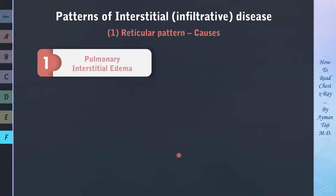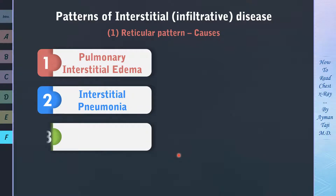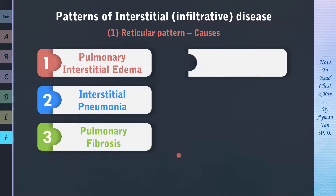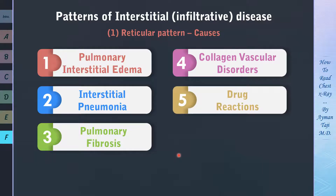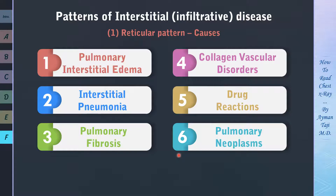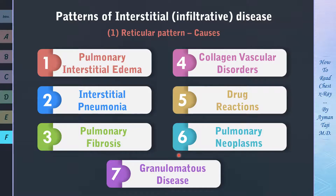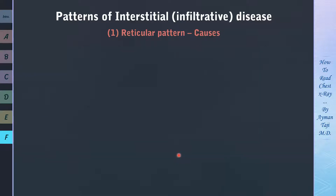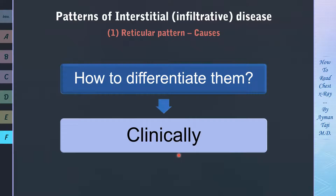The reticular pattern can be due to pulmonary interstitial edema, interstitial pneumonia, idiopathic pulmonary fibrosis, collagen vascular disorders like rheumatoid arthritis or scleroderma, or drugs like chemotherapeutic agents. In a cancer patient, it can be due to metastasis or a granulomatous disease like pulmonary sarcoidosis. How to differentiate them all? Clinically. So let's take some cases and discuss them.